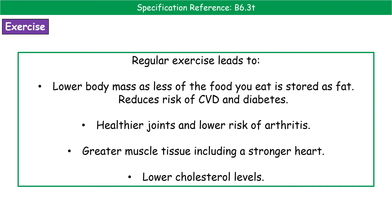To reduce the risk of cardiovascular disease, we can take regular exercise. This helps because you'll have a lower body mass since less food is stored as fat, reducing CVD and diabetes risk. Carrying less mass means healthier joints and lower risk of arthritis. You'll also have greater muscle tissue, leading to a stronger heart — because your heart is a muscle.